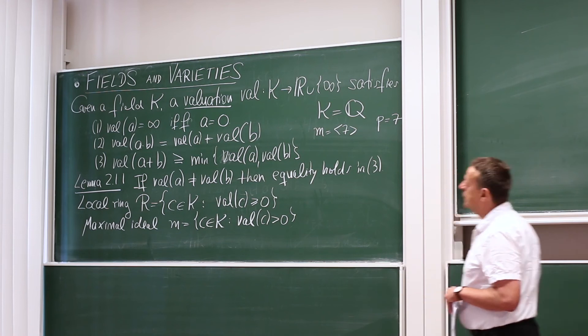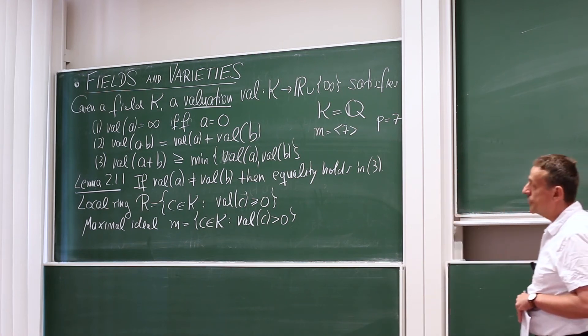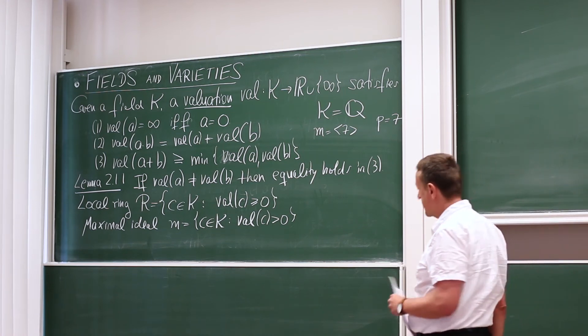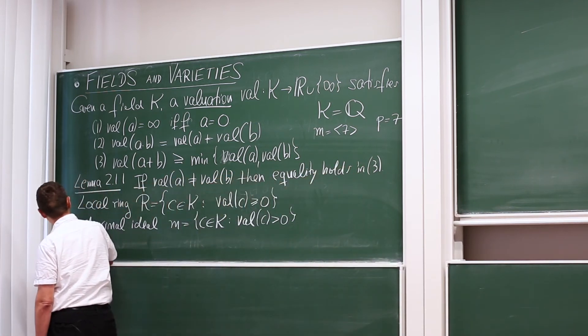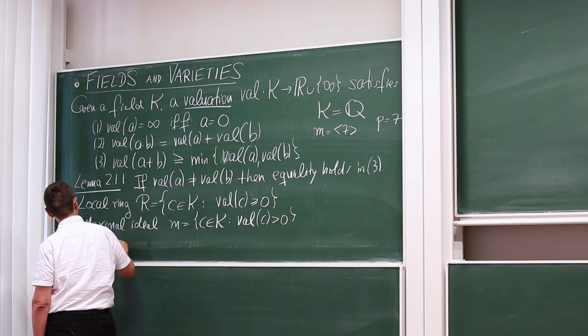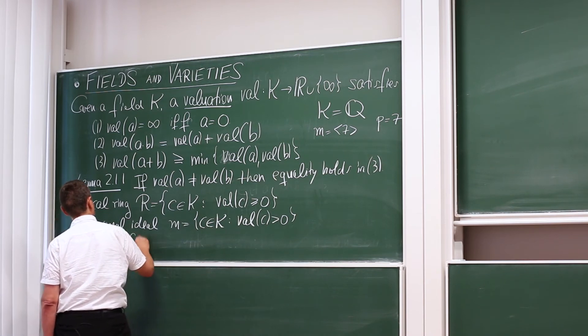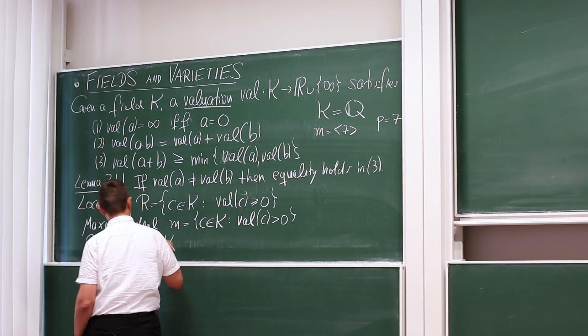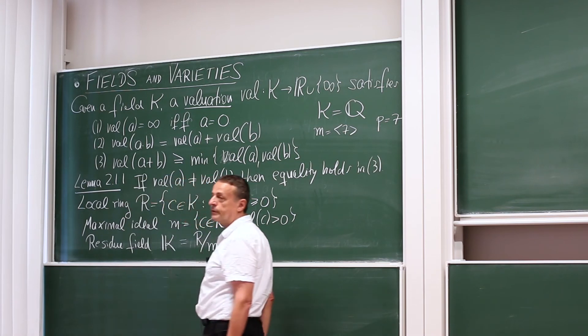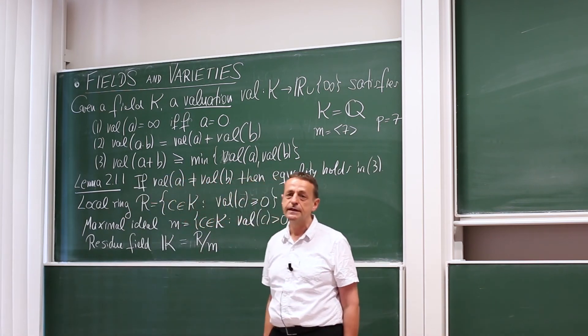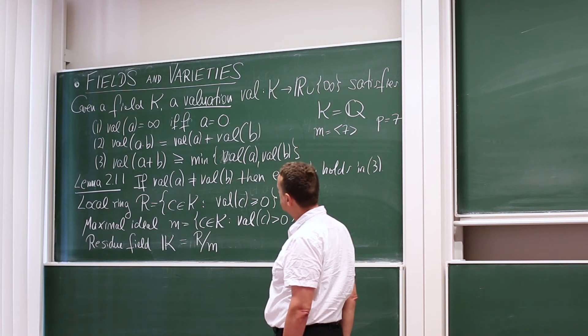So these are all rational numbers where the numerator is actually divisible by 7. And finally, last but not least, there's the small field or the residue field, little k. And the residue field is R mod M. So if you have the local ring, modulo the maximal ideal, that's a field. And this will be called the residue field.